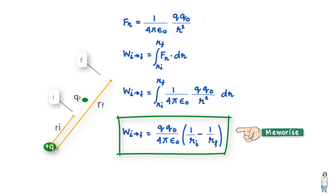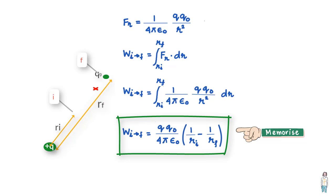You can see that the work done by this force as the charge moves from I to F depends only on the initial distance R_I and the final distance R_F — or simply put, only on the endpoints. But what if we have a setup where I and F are not on the same radial line and the charge takes a random path?